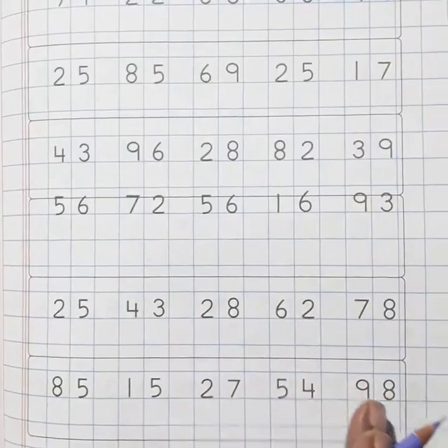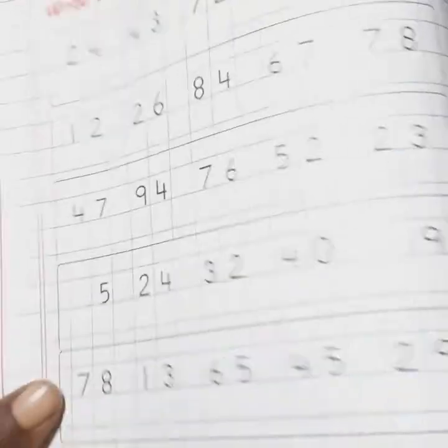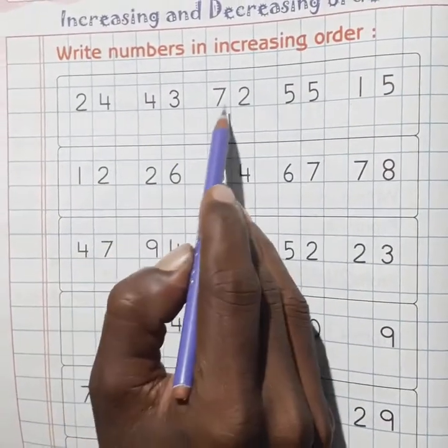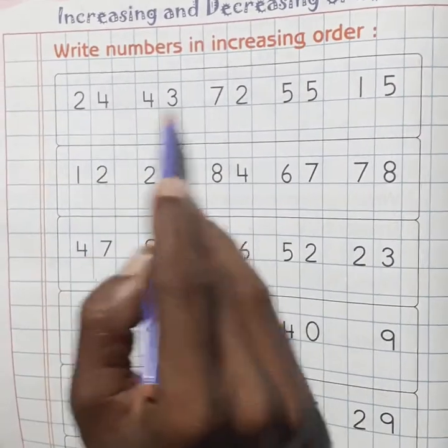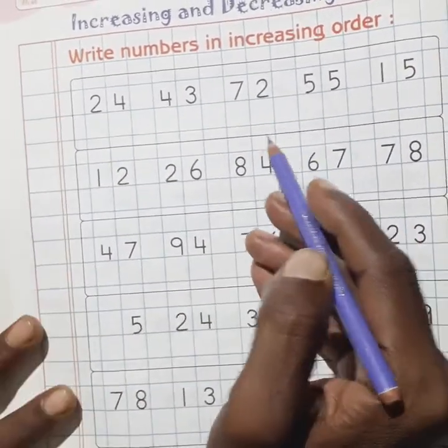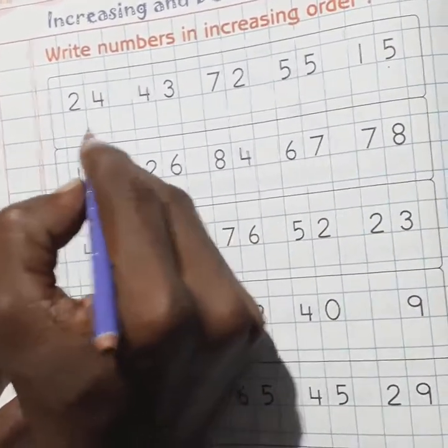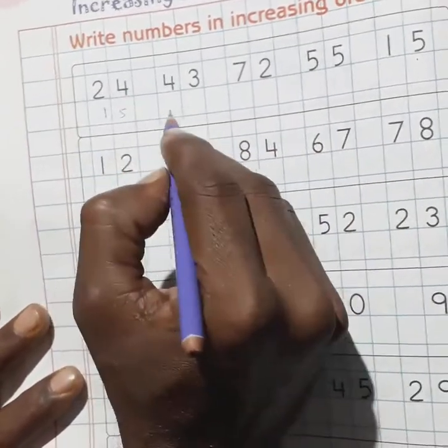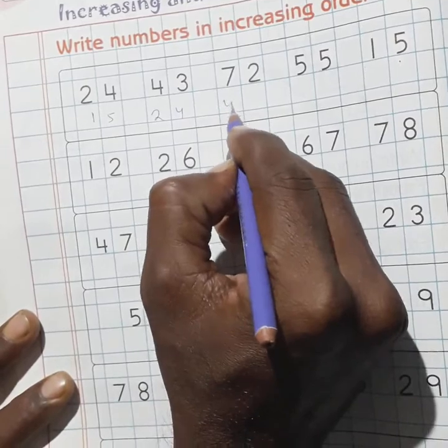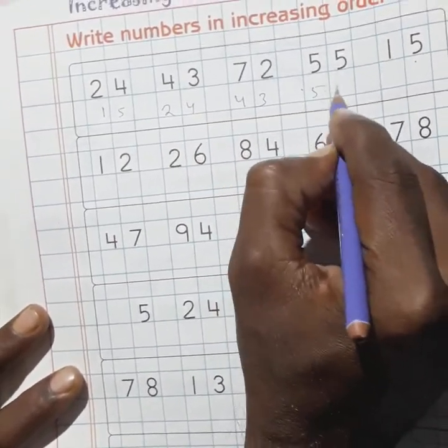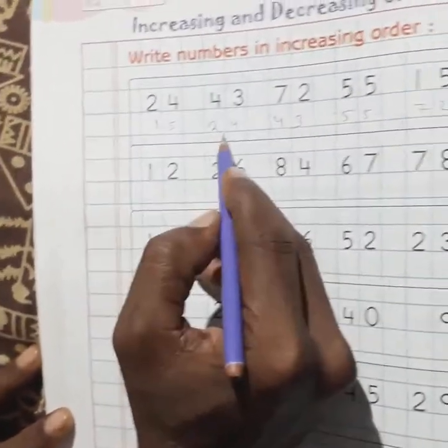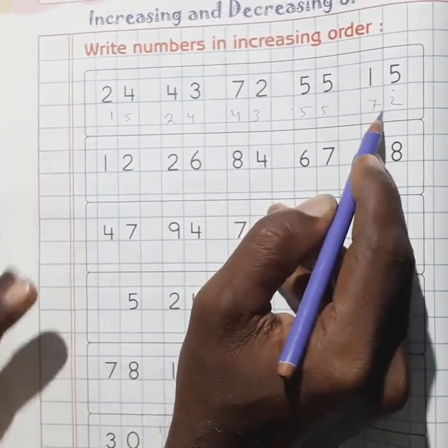Your next page here, write numbers in increasing order. Student, here are given some numbers just like 24, 43, 72, 55, and 15. Now arrange it in ascending order, that means smallest number to biggest number. Here, 15 is the smallest number. So write here 15, then 24, then 43, then 55, and the last 72. Now arrange it just like 15, 24, 43, 55, and 72.